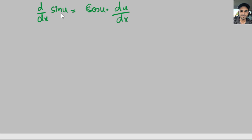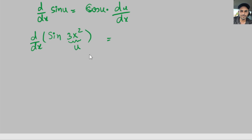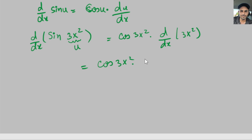We apply the chain rule when we are taking the sine of some function — we multiply at the end by the derivative of that function as well. For example, if we have sine of 3x squared and want to take the derivative, we apply the chain rule: the derivative of sine of u is cosine of u times du over dx. Here u is 3x squared, so we write cosine of 3x squared times the derivative of 3x squared, which is 6x. So the derivative is cosine of 3x squared times 6x.